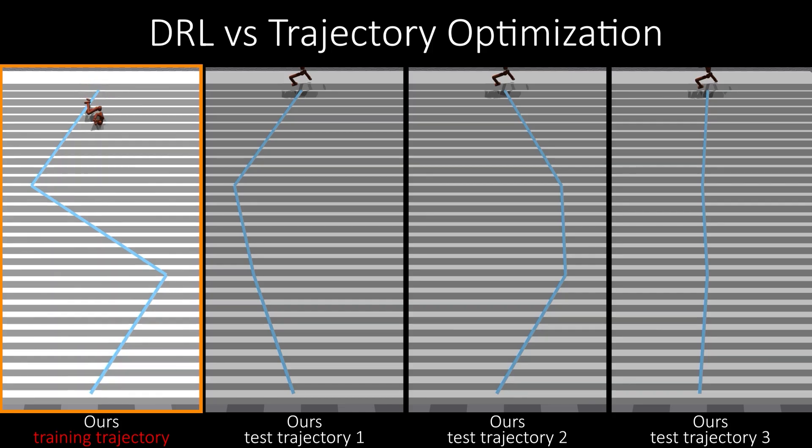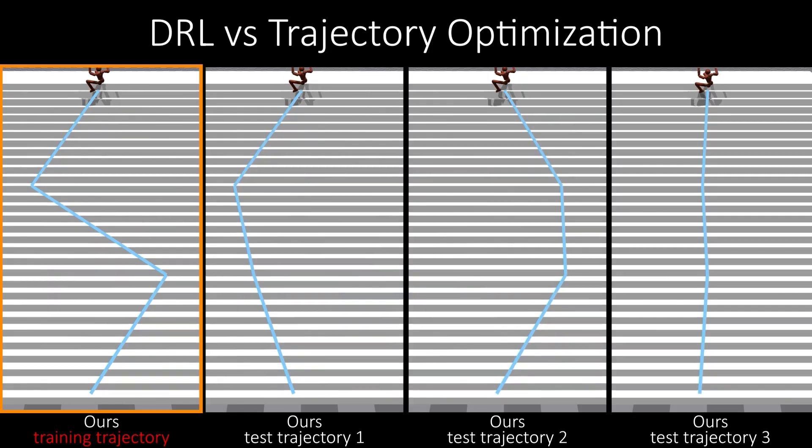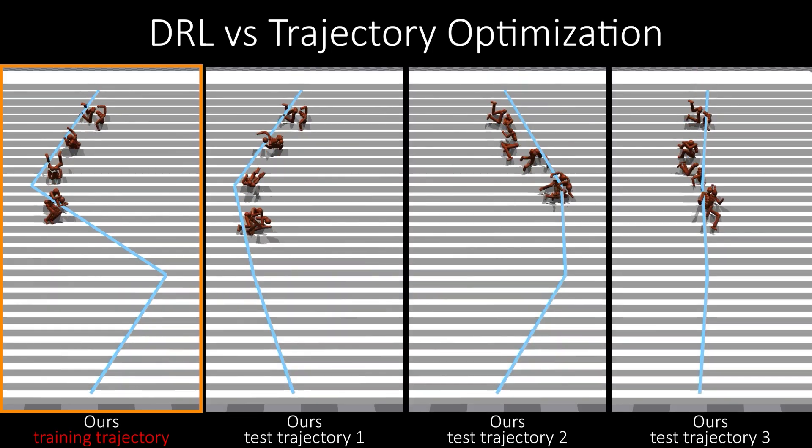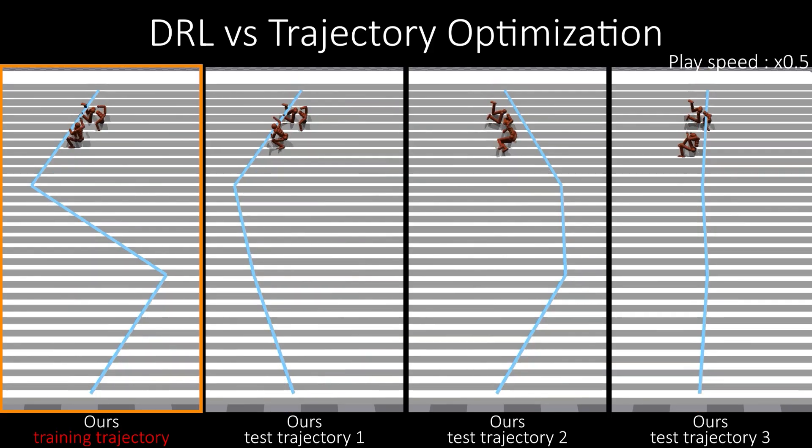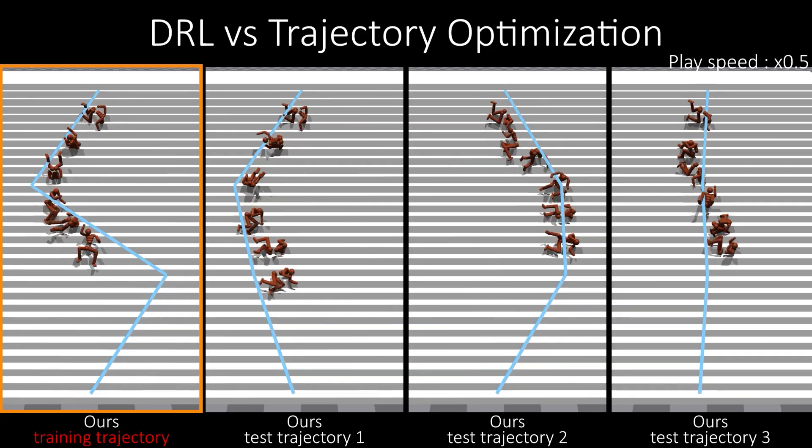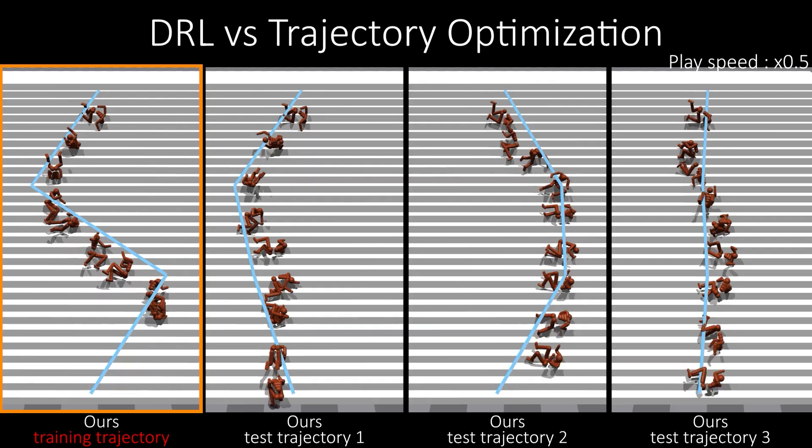Our system is evaluated on four topics. We compare our reinforcement learning-based approach with traditional trajectory optimization methods by using a stair scene where the agent follows an S-shaped trajectory. This experiment shows whether the policy trained on the S-shaped trajectory can generalize to other trajectory shapes. For the DRL approach, the policy demonstrates successful adaptation to unseen trajectories, accurately following them despite being trained solely on the original S-shaped trajectory.